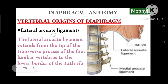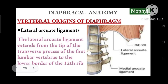The lateral arcuate ligament extends from the tip of the transverse process of the first lumbar vertebra (L1) to the lower border of the 12th rib.